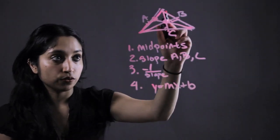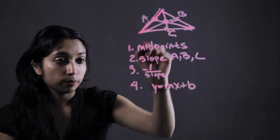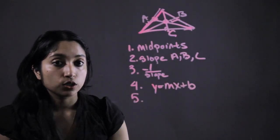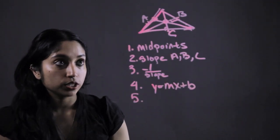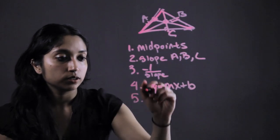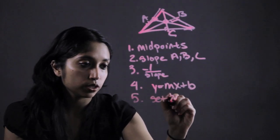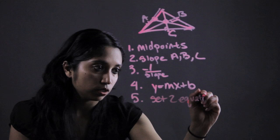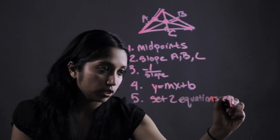Once we have the equations for these three perpendicular bisectors, all we have to do is set two equations equal to each other and solve.